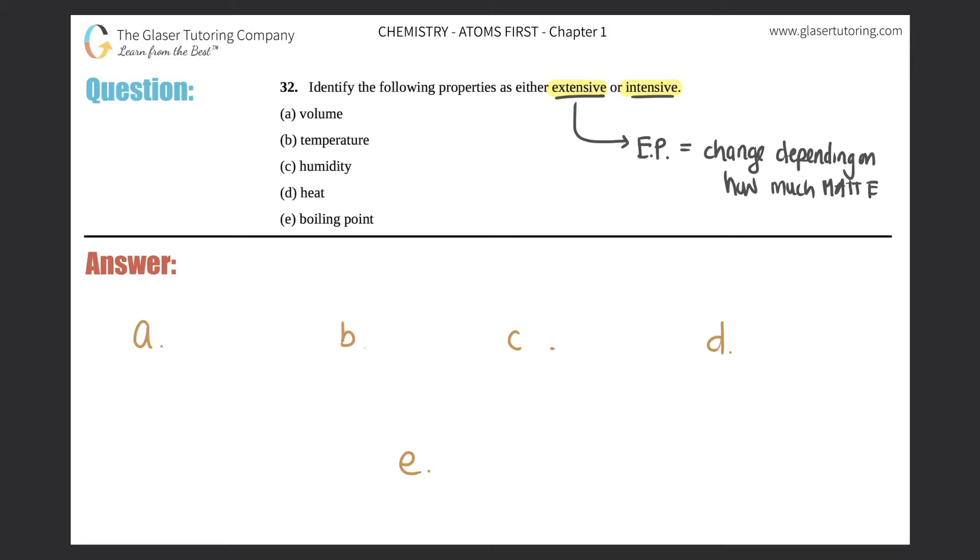Mass, or how large something is, how much matter it contains. On the flip side, intensive properties (IP) are properties that do not change depending on how much you have of it. It does not change depending on matter.